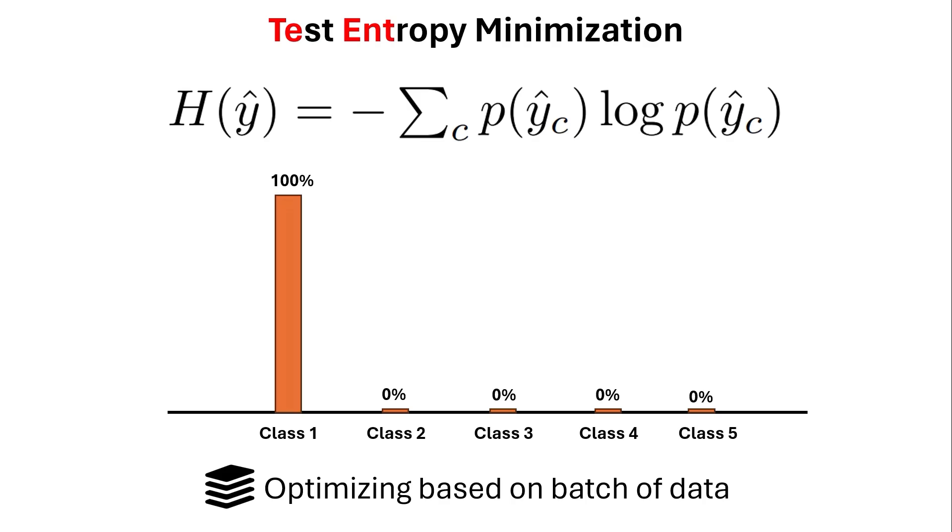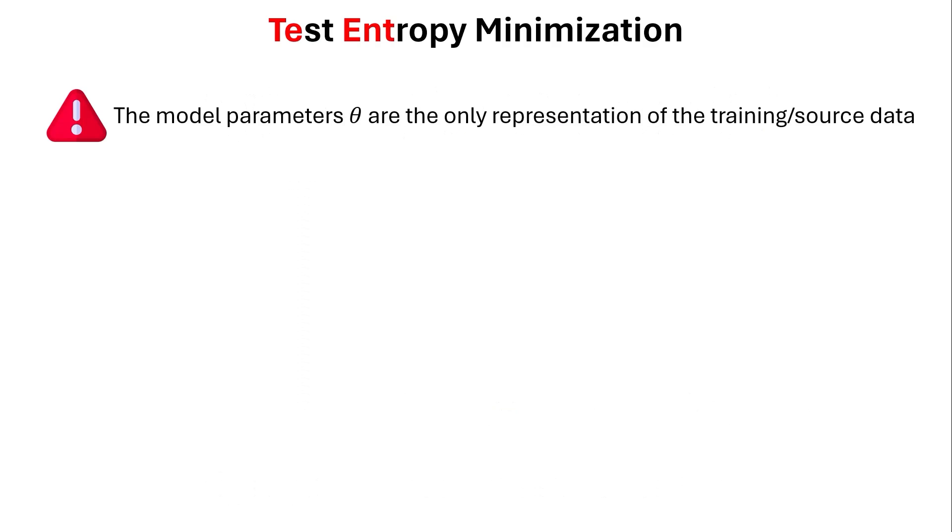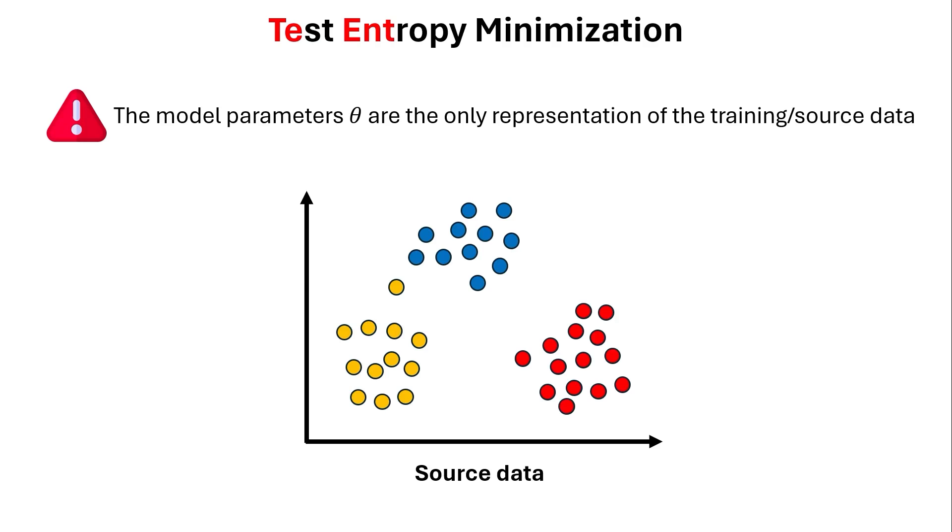But this is not the only issue that we might have. The other issue is that the model parameters are the only representation of the training or source data. And modifying the model parameters itself could be dangerous. Why dangerous? Because as they say, at the test time, it might change the distribution of the data and cause the model to diverge from its training. And in my opinion, what that means is, let's say the embedding of our model is only in two dimension, and it can classify three different classes on the source data.